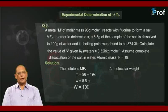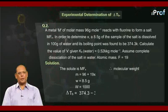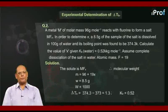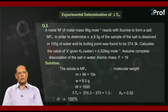Capital W is 100 grams. Delta Tb is 374.3 minus 373, that is equal to 1.3. And Kb is 0.52. Alpha is 100%.